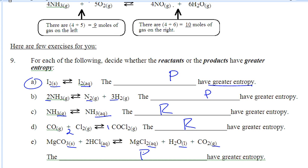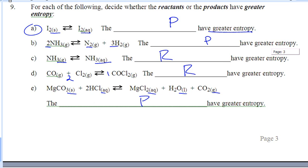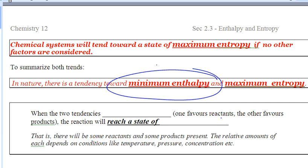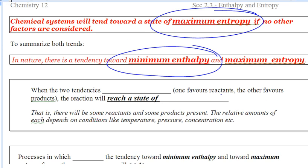We're looking for the side that has the greatest entropy — it wants to be the most random. So what are the two things we've just talked about in this lesson? In regards to enthalpy, we want to have minimum enthalpy. And in regards to entropy, we want maximum entropy. Those are the two situations — every reaction wants to be the most random with the least amount of energy.